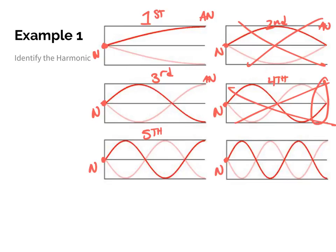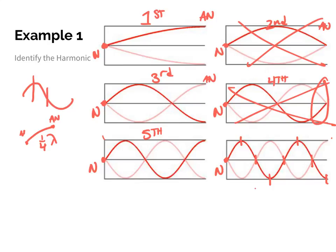To identify which harmonic a pattern represents, count fourths — from a node to an antinode is one fourth of a wave. Counting the last wave: one fourth, two fourths, three fourths, four fourths, five fourths, six fourths, seven fourths — because this is seven-fourths, the number seven tells us we're on the seventh harmonic.